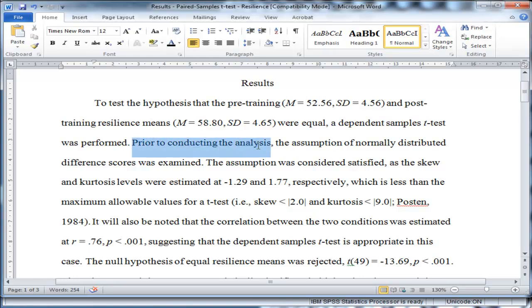Now prior to conducting the analysis, the assumption of normally distributed difference scores was examined. Now each analysis usually has an assumption, so in this case here, after the descriptive statistics are reported, the assumption of normality is being tested, and it's saying the assumption was considered satisfied as the skew and kurtosis levels were estimated at negative 1.29 and positive 1.77 respectively, which is less than the maximum allowable values for a t-test, which is 2 and 9 for skew and kurtosis. These are absolute values.